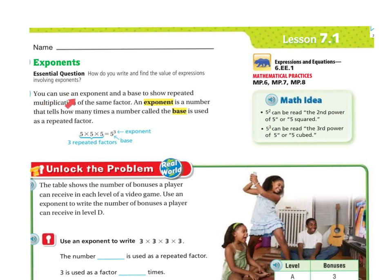You can use an exponent and a base to show repeated multiplication of the same factor. An exponent is a number that tells how many times a number, called the base, is used as a repeated factor. So here, the base is 5 and the exponent is 3, which means 5 is repeated 3 times: 5 times 5 times 5. Don't make the mistake of saying 5 times 3 — it's 5 times 5 times 5.